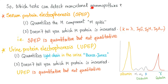So which tests can detect monoclonal gammopathy? We'll discuss four tests. First, serum protein electrophoresis: it can quantify the M component but doesn't tell you which M protein is increased. So serum protein electrophoresis is quantitative but not qualitative. Second, urine protein electrophoresis uses the same mechanism but applied to urine — it quantifies light chains, also known as Bence-Jones proteins, but doesn't identify which M protein is elevated. Again, quantitative but not qualitative.